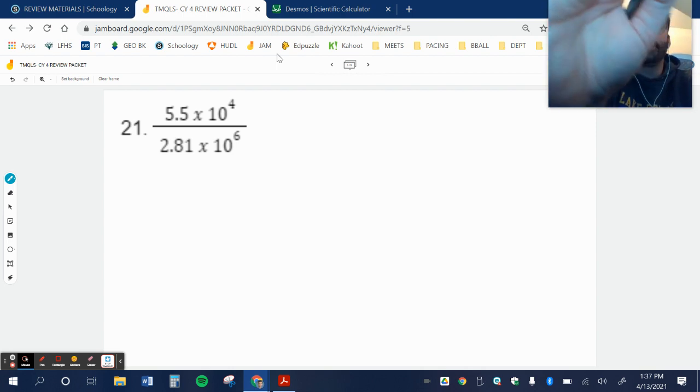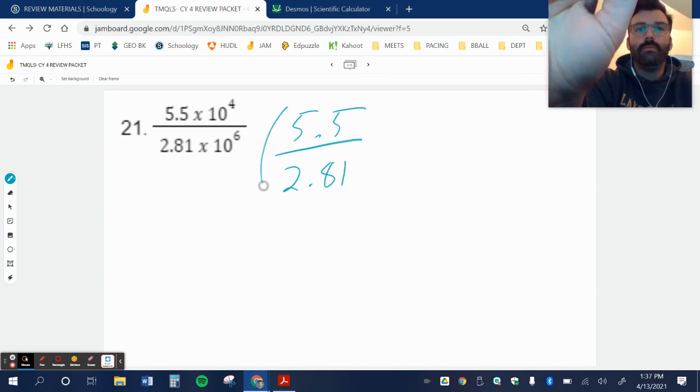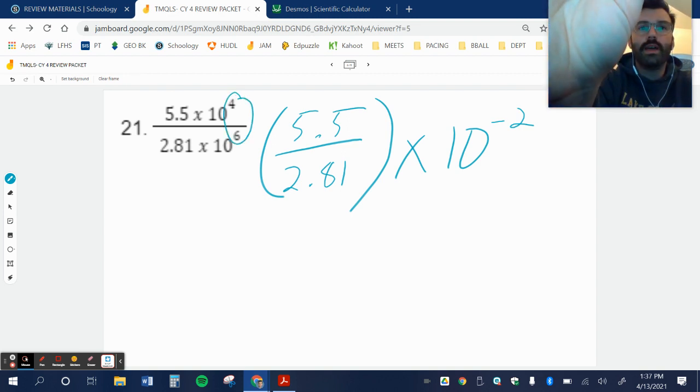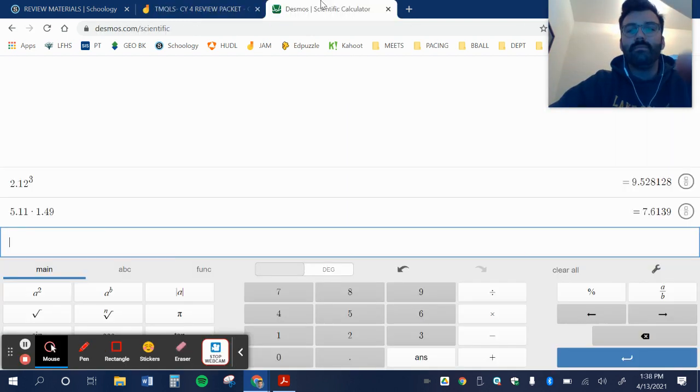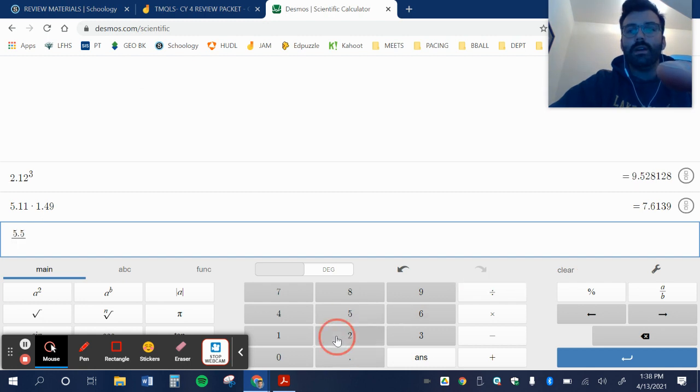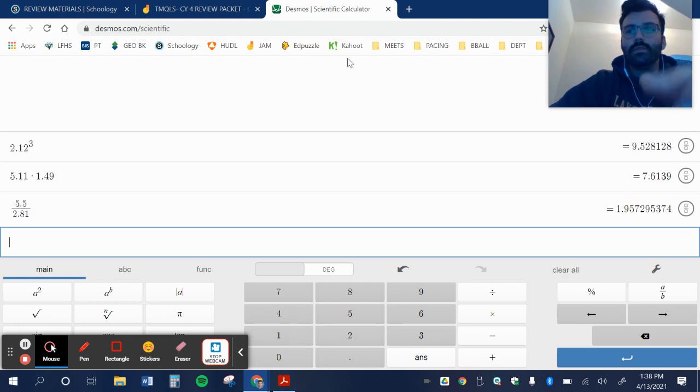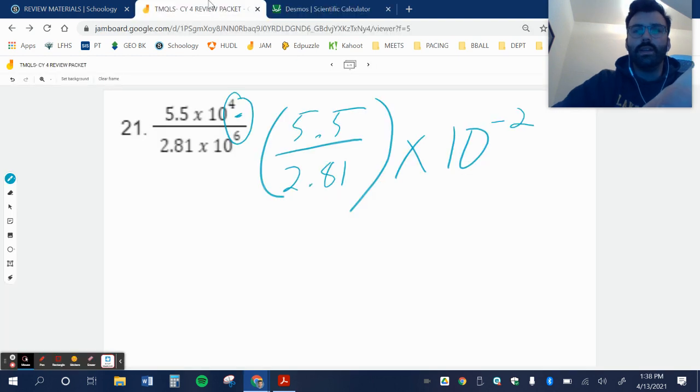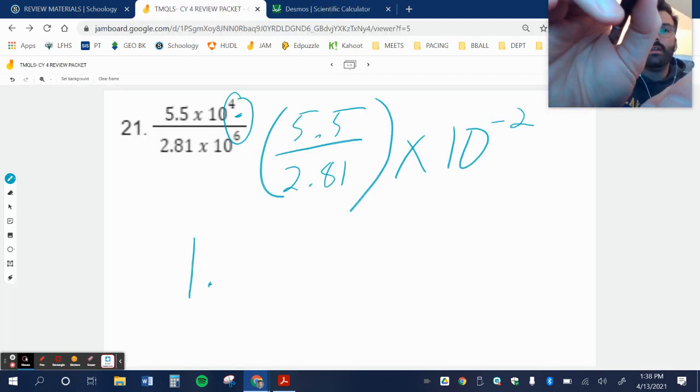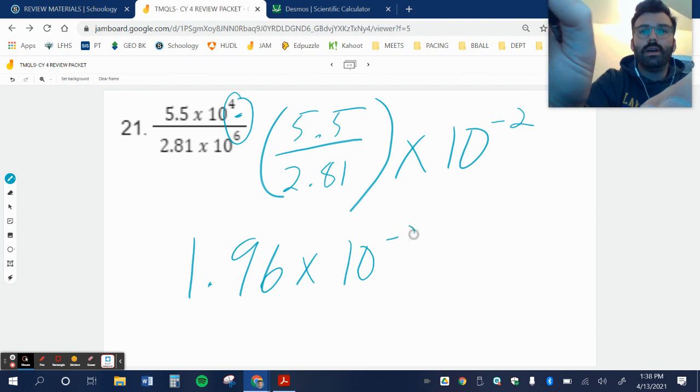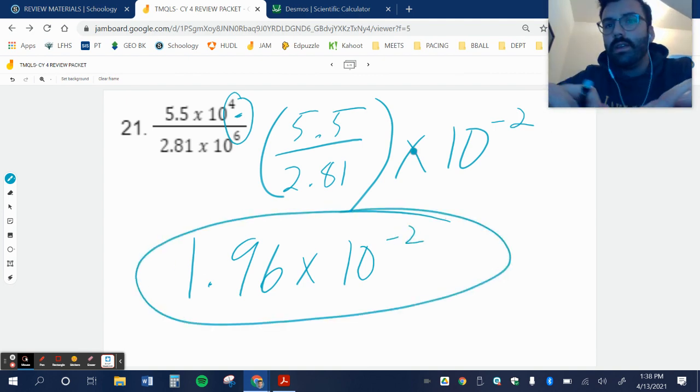Oh, this is our last one with scientific notation. How we're going to do this is I'm actually going to divide 5.5 divided by 2.81. That's going to be times 10 to the negative second. Remember I subtract these two. So 5.5 divided by 2.81 equals 1.96. So again, I'm lucky, I don't have to adjust my exponential, my scientific notation.